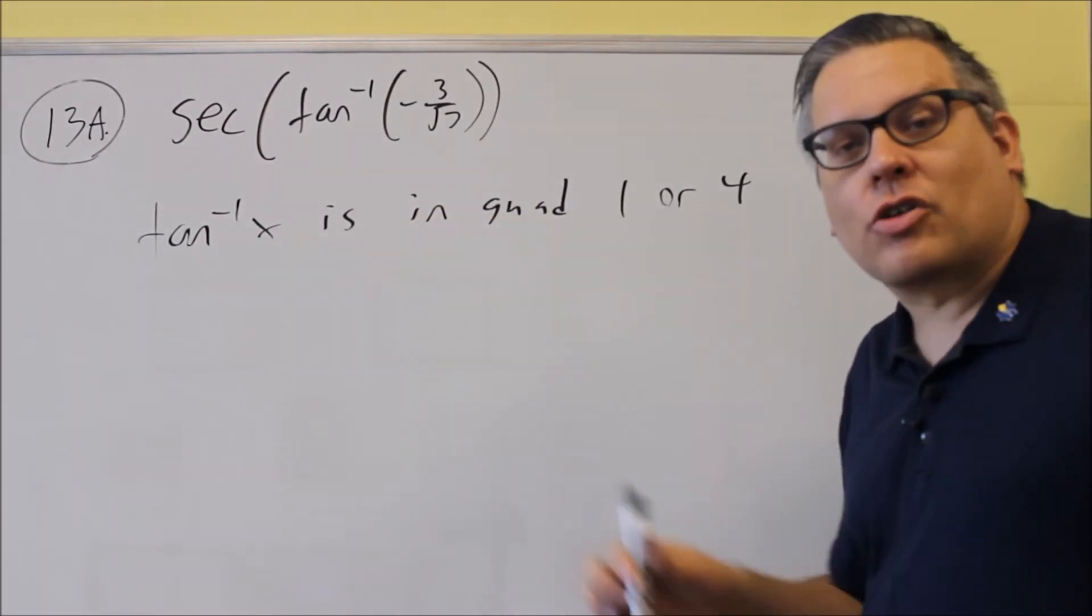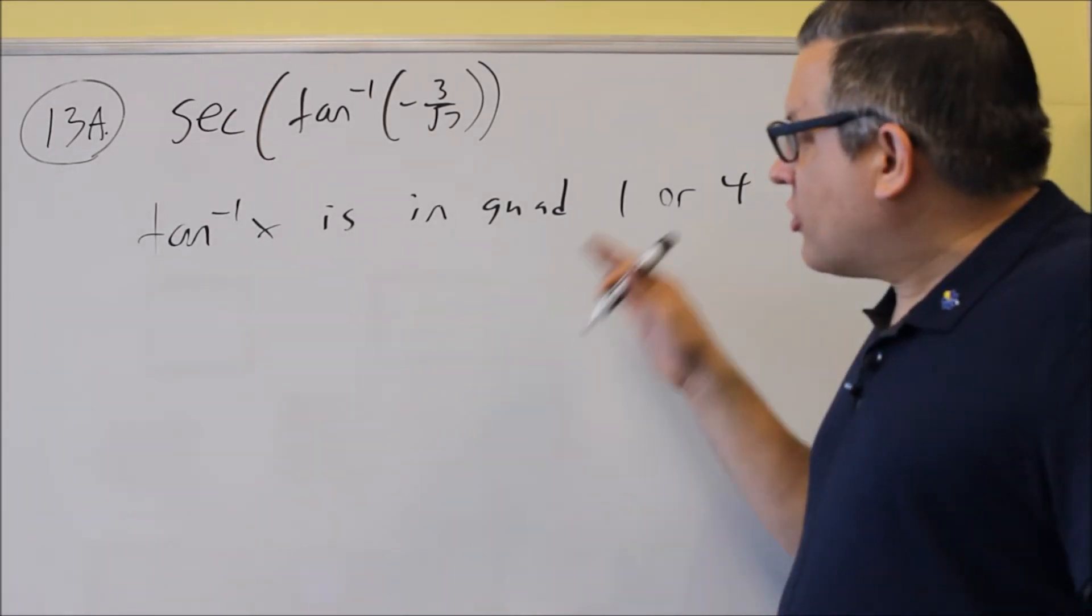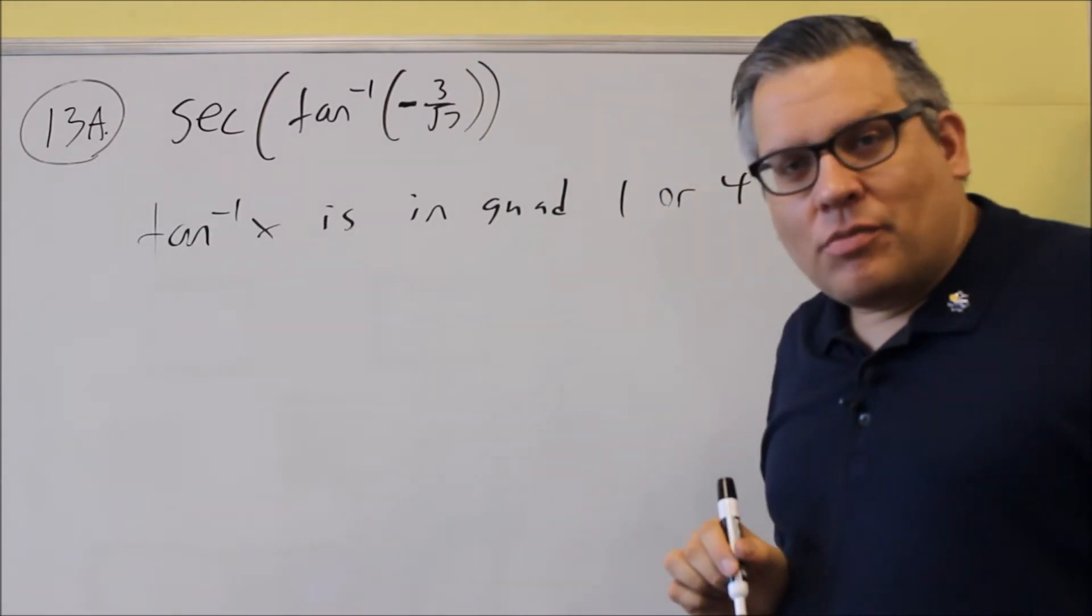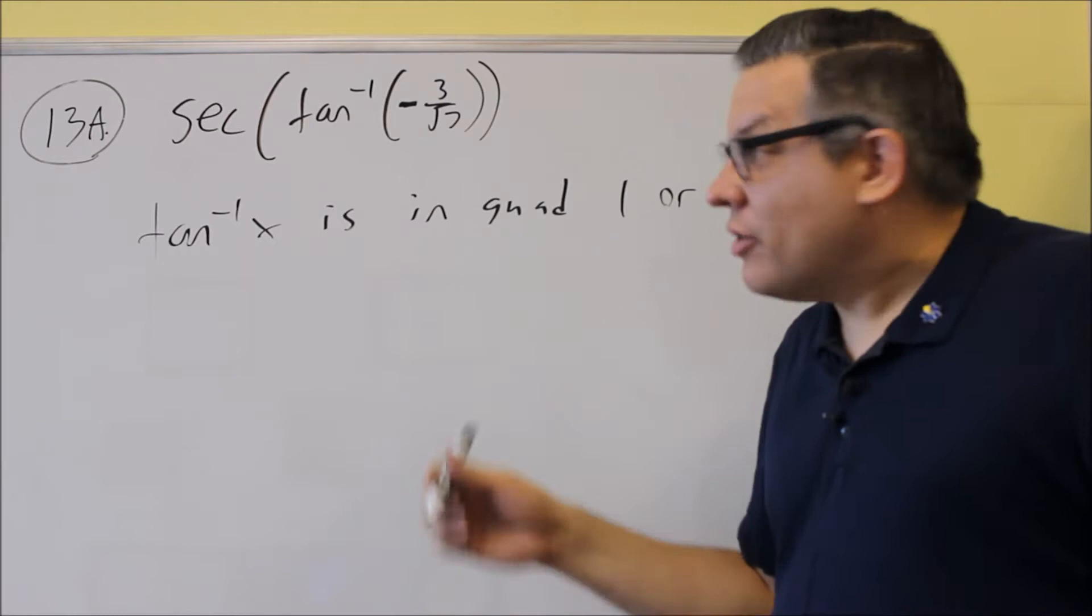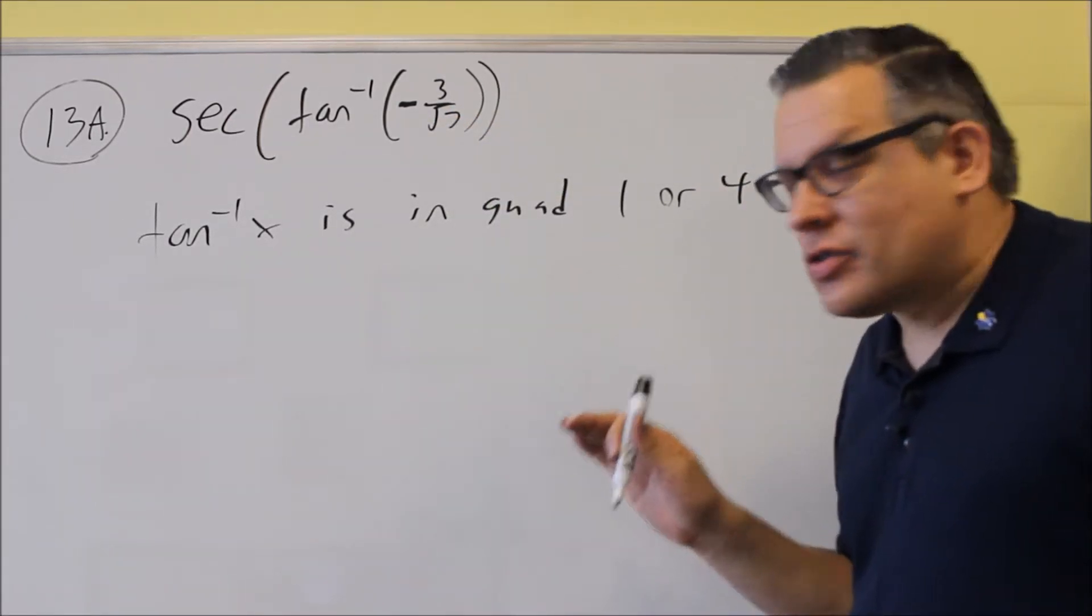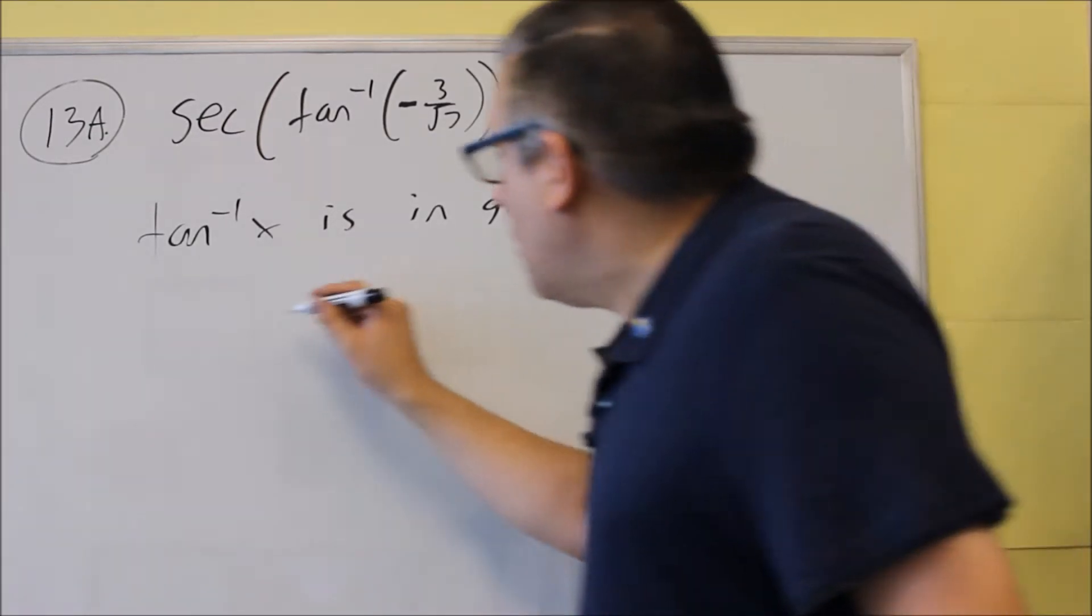We know that the triangle can be drawn in either quadrant 1 or 4. You're going to decide whether it's in quadrant 1 or 4 based on the sign that you have here. If that's positive, then you're going to draw it in the first quadrant. If it's negative, we have to draw it in the fourth quadrant because out of those two quadrants, the fourth quadrant is the one where tangent is negative.